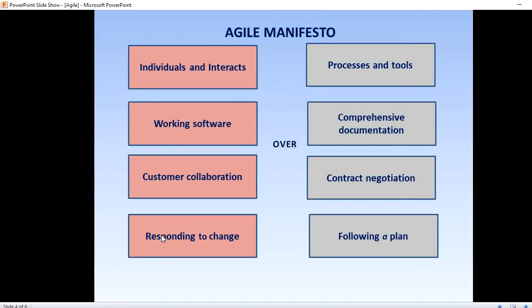The first value — individuals and interactions over processes and tools — means that having the right group of individuals on your software team is vital to success. The best possible tools in the wrong hands are worthless. Perhaps even more important is how these individuals communicate with each other. These interactions between team members are what help the team collaborate and solve problems that arise.